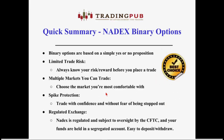Quick summary before I hand it over to Gail: binary options are based on a simple yes-or-no proposition. You have limited trade risk — you always know your risk and reward before you place a trade. You can choose from multiple markets. You have spike protection; if the market whipsaws, you can trade without fear of being stopped out. It's a regulated exchange subject to strict CFTC oversight. Your funds are held in a segregated US bank account, and it's very easy to make deposits and withdrawals.